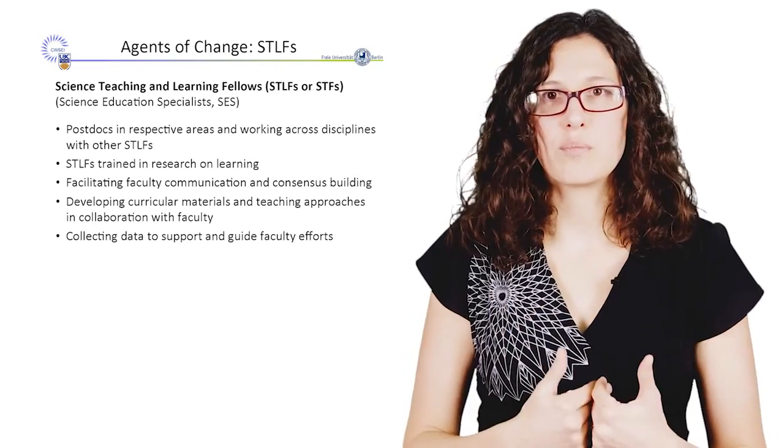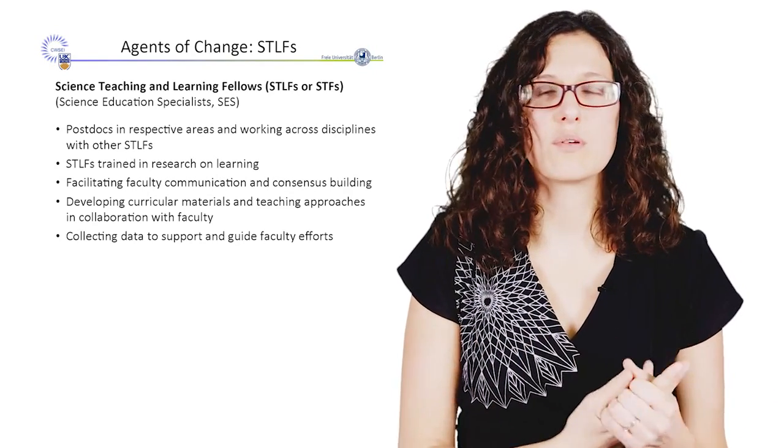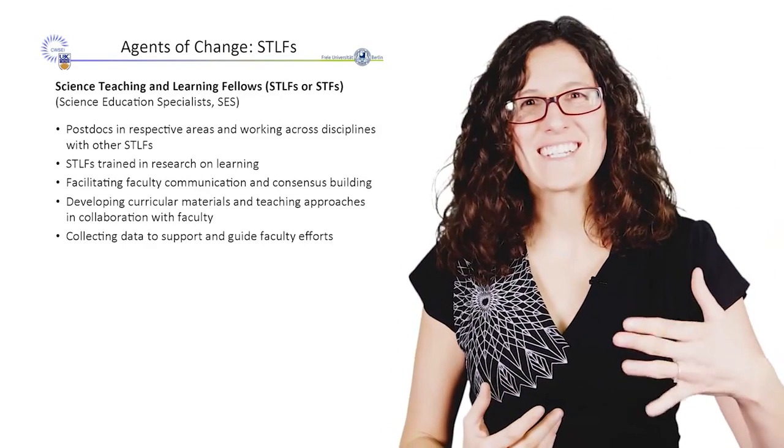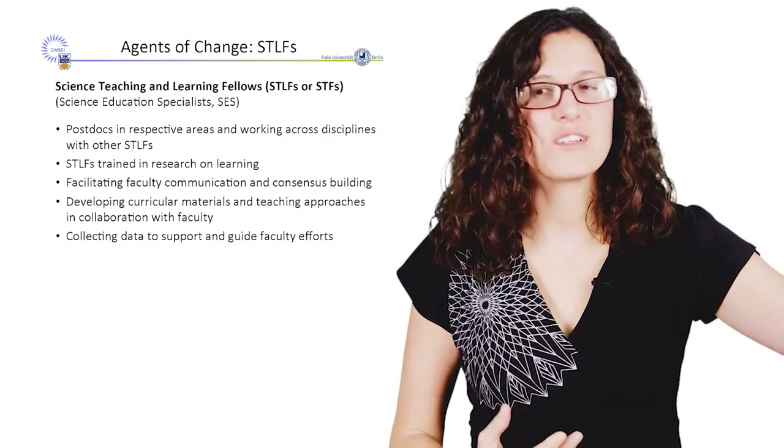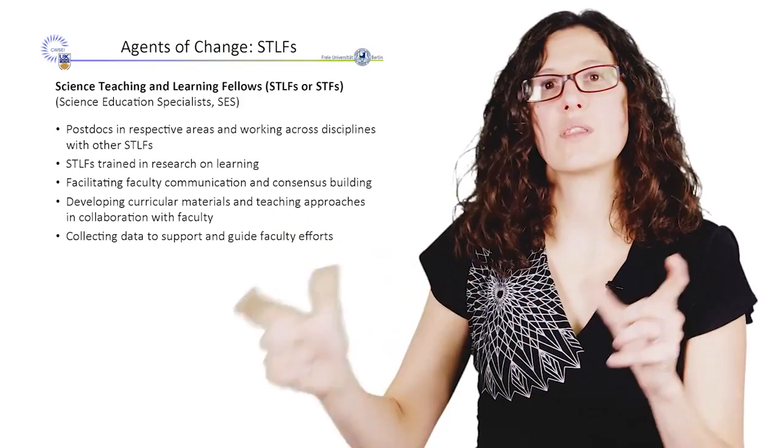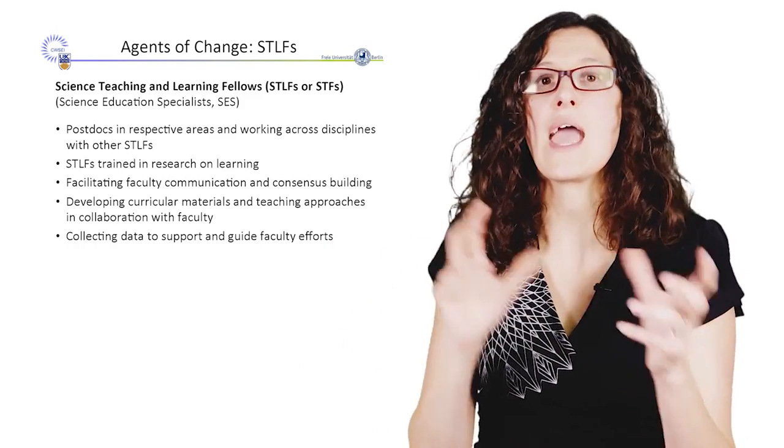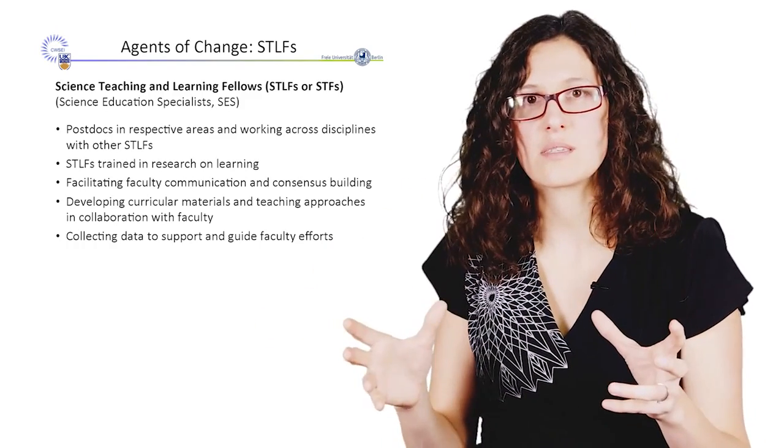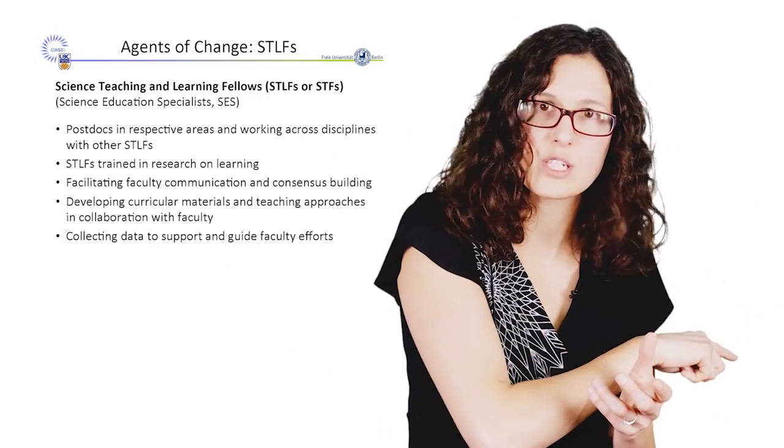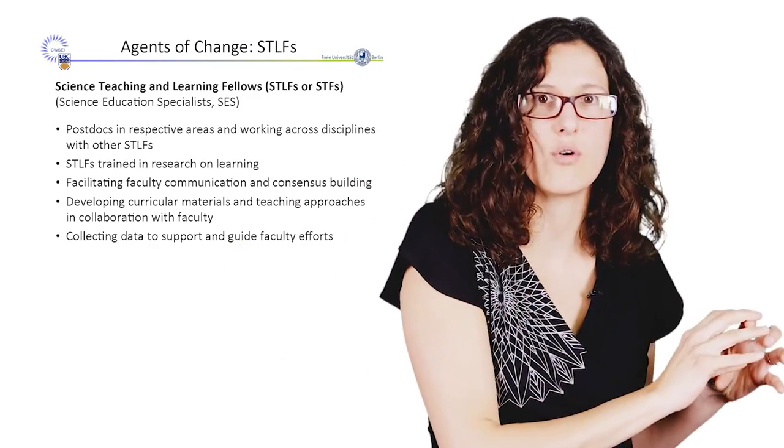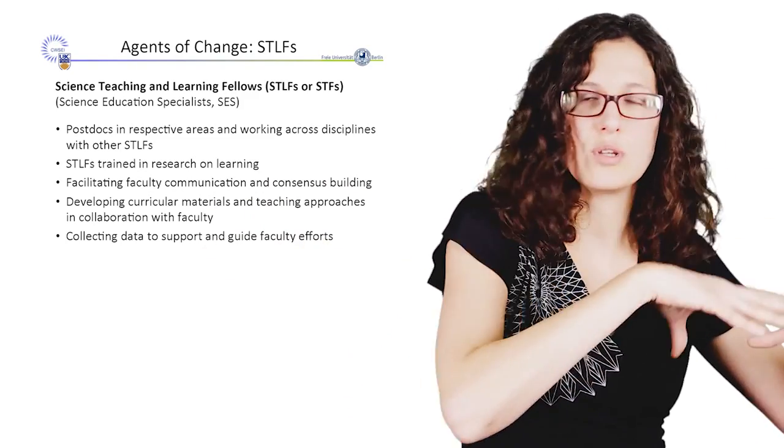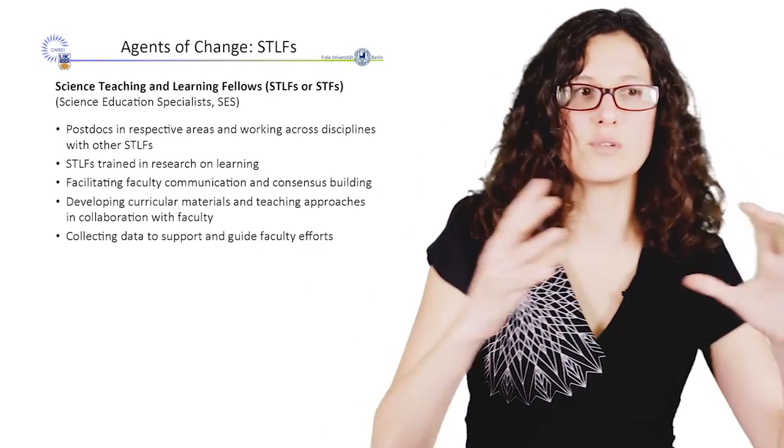So I would be one postdoc in the physics department and at the height of it, there were five postdocs in the physics department. But there would be STLF postdocs in geophysics and math and chemistry and we would meet once a week. So I could hear what they're doing there because a lot of the techniques can be done in different contexts. I could hear what the math group was doing and think, oh, I could use that actually for this class in the physics department and sort of take that idea over. So you had a community for the STLFs and then your discipline community you worked in as well. And you sort of flowed between the two.